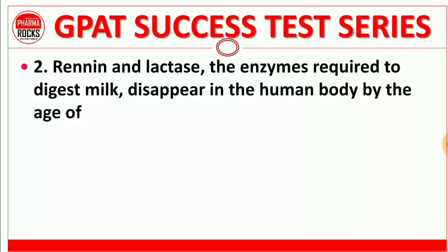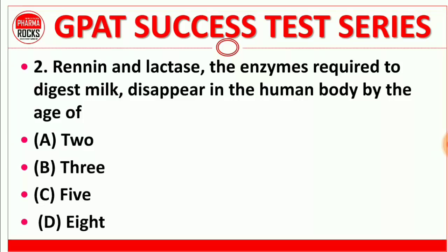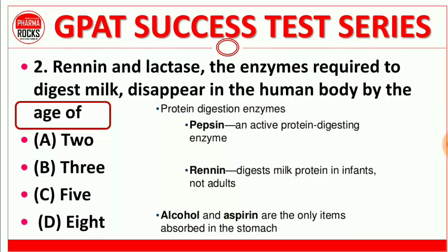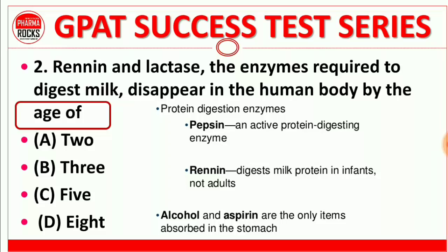Question number 2: Rennin and lactase, the enzymes required to digest milk, disappear in the human body by the age of 2, 3, 5, or 8? The right answer is 2. At the age of 2 years, protein-digesting enzymes like pepsin and rennin are affected. Rennin digests milk protein in infants, not in adults. Also, alcohol and aspirin are the only items absorbed in the stomach. Right answer is A.